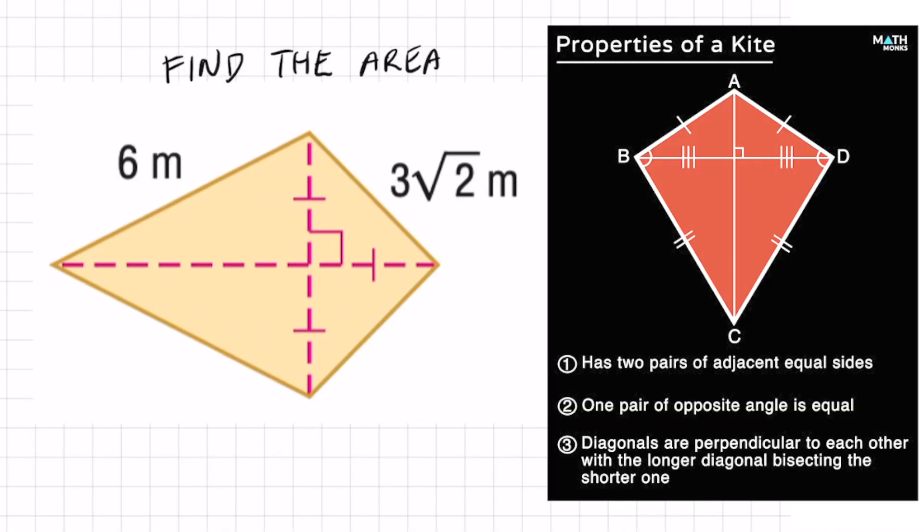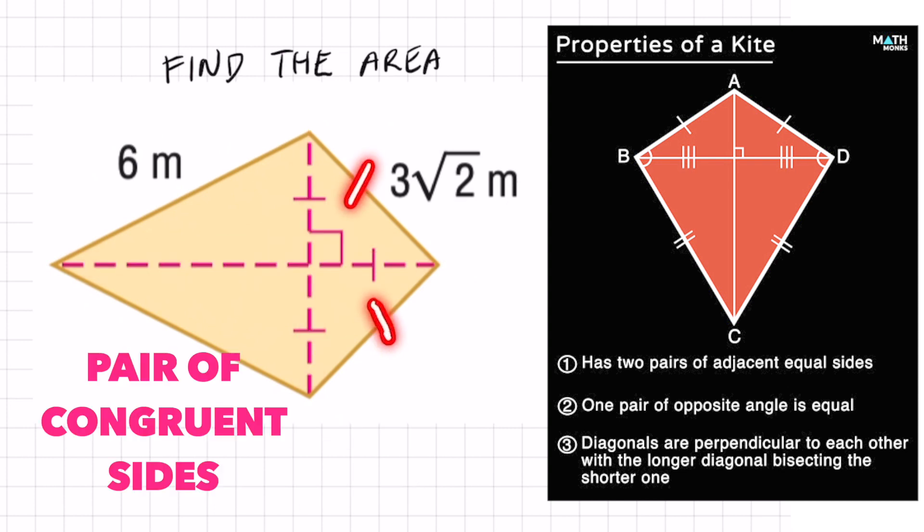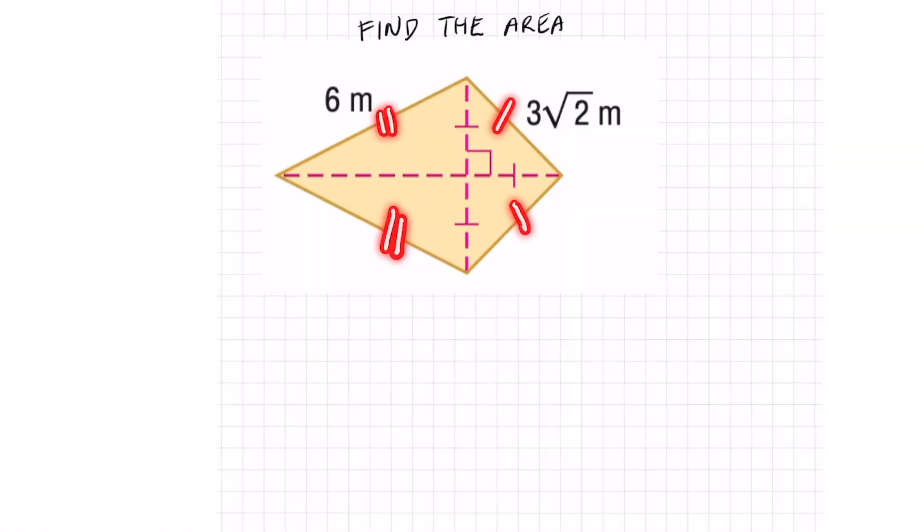We're going to find the area of the shape below. So if you look at the picture, we got two diagonal sides right here that are perpendicular, and we also have a pair of congruent sides. So if we got those things, then we got ourselves a kite.